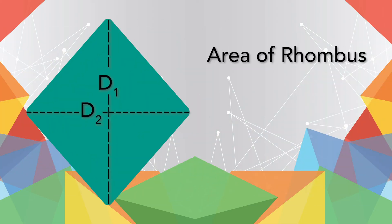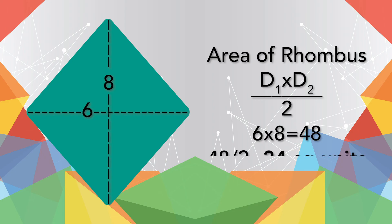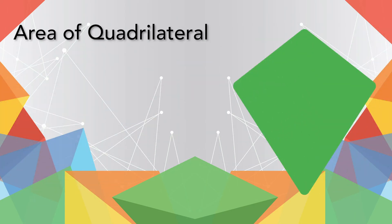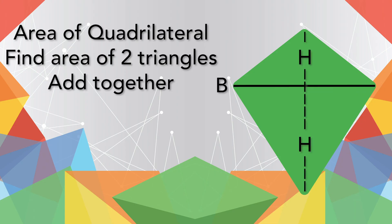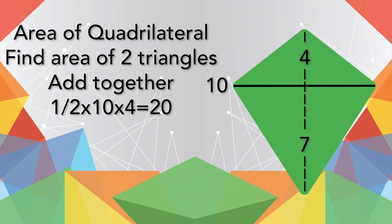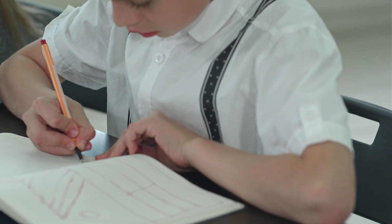To figure out the area of a rhombus, you use its two diagonals. This rhombus has diagonals of 6 and 8 — the formula is to multiply them together and then take half: 6 times 8 is 48, and half of that equals 24 square units. Finally, the quadrilateral: first draw a diagonal to turn it into two triangles, then find the area of those two triangles separately and add them together — one half base times height, plus one half base times height. The area of this quadrilateral would be one half of 10 times 4, plus one half of 10 times 7, or 20 plus 35 — 55 square units.